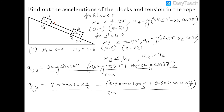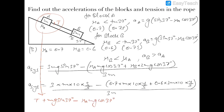To find the tension T in the rope, we write the equation for block A alone: T + Mg sin 37° − μA Mg cos 37° = M × a_system. Substituting the calculated value of a_system gives the tension T.